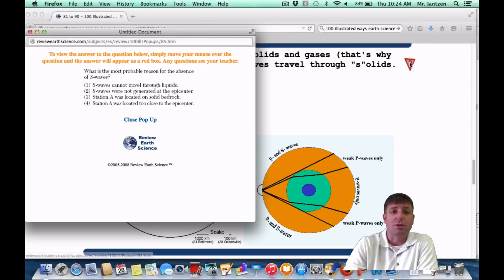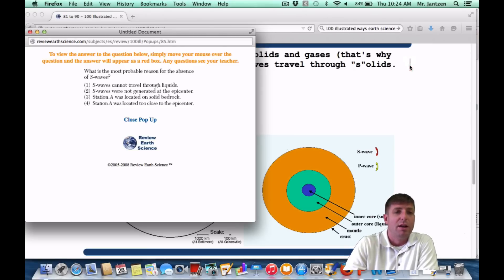Or you might get P waves only or you might get P waves and S waves if you're close to the earthquake. So it's all about where your seismograph station is located. As a regents question, it may appear something like this: what is the most probable reason for the absence of S waves? So why aren't S waves getting to your seismograph station? Once again, S waves can't go through the liquid outer core or S waves can't go through liquids.